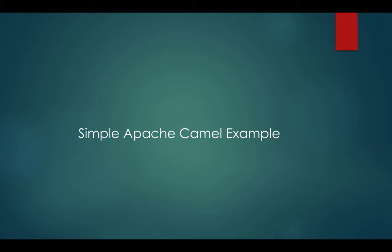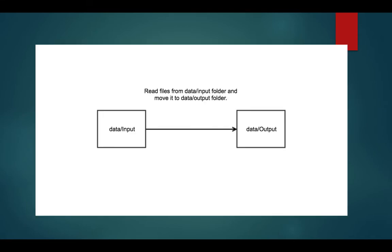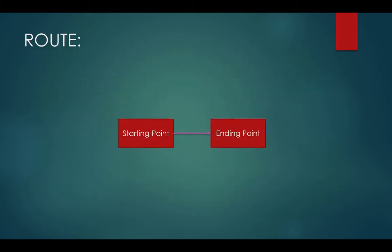Hi everyone, welcome back to this tutorial. In this tutorial we will code a simple standalone Camel example. The use case we will be coding here is moving files from the input directory to the output directory. If you remember from the prior tutorials, in Camel everything is a route. In general terms, your route will have a starting point and an ending point. Let's take a look at how a Camel route looks.